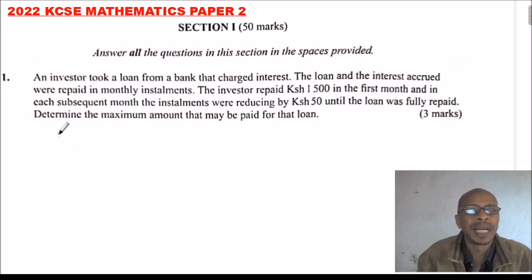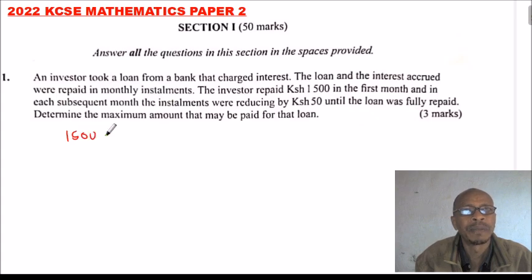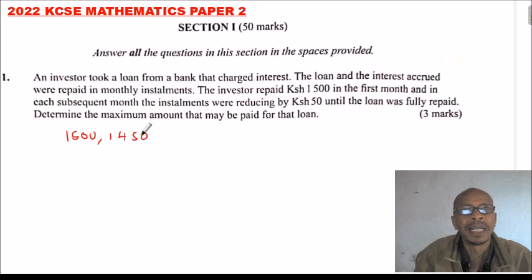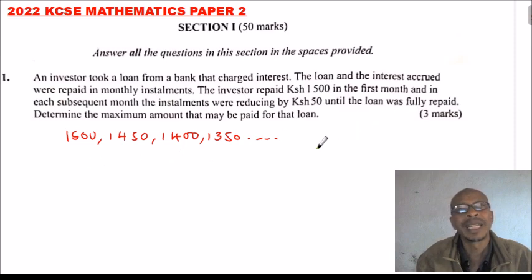So here we can form a sequence whereby the first payment was 1500, reduced by 50, so we get 1450. The next one is 1400, the next one is 1350, and on and on. We can continue like that and sum up the amount, but that will be a lot of work, so we need to use a formula.